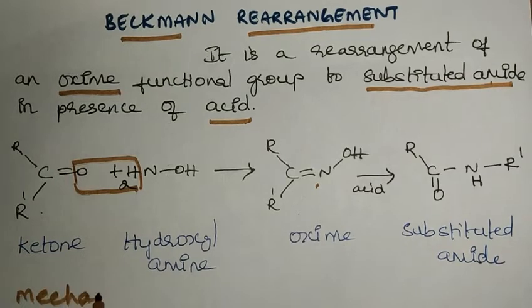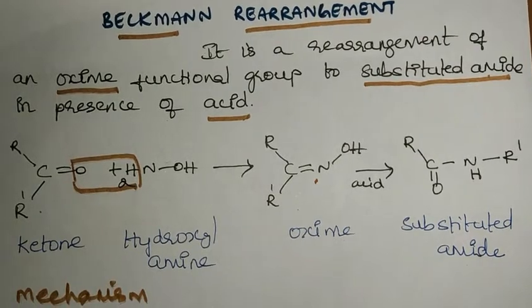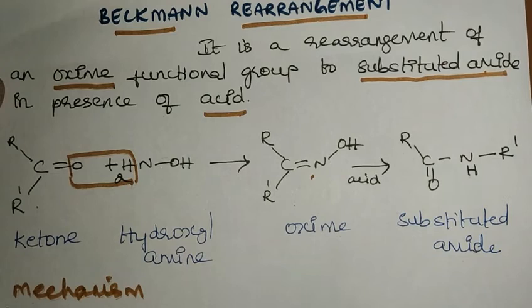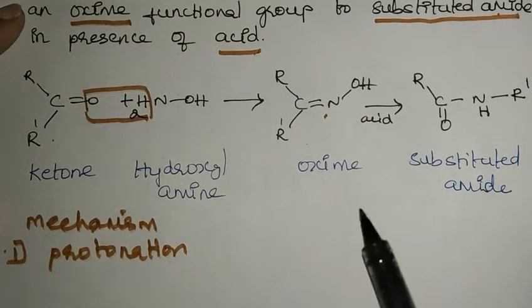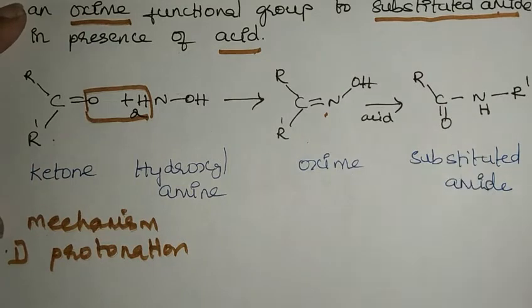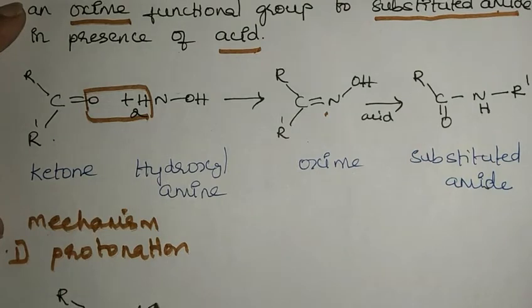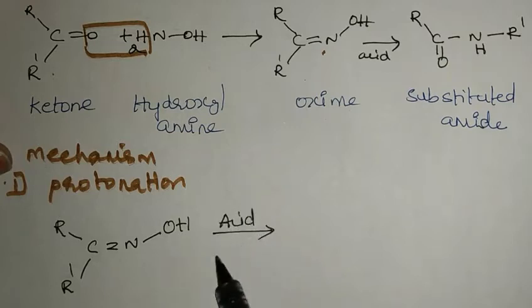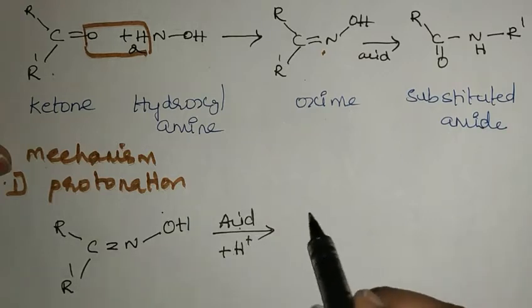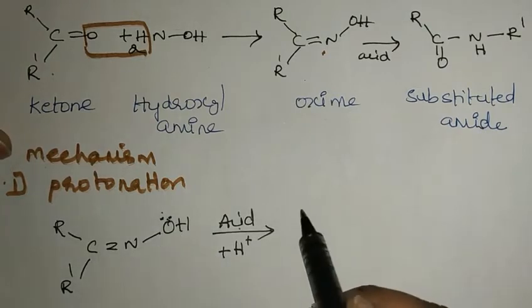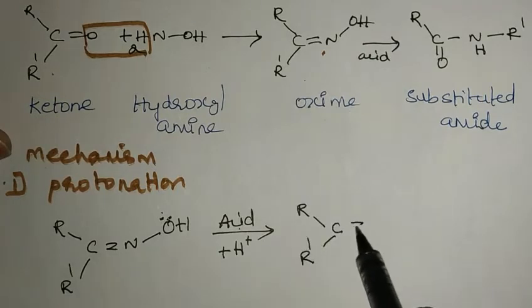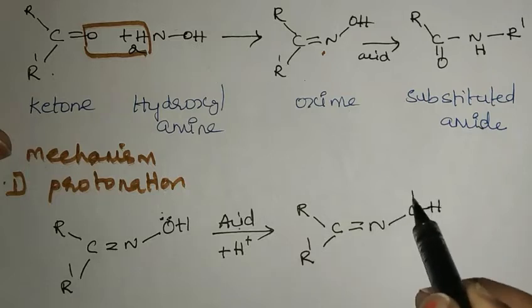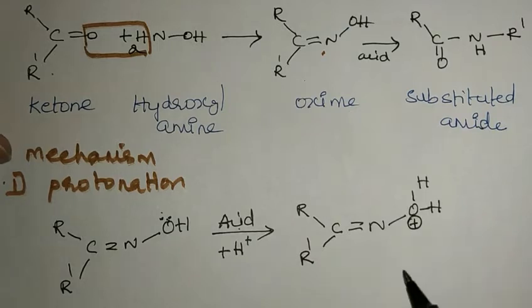Now we will see the mechanism involved in this reaction. The first step in this rearrangement is protonation — proton is added. The oxime will accept a proton from the acid, where the acid donates a proton to the electron-rich oxygen of the hydroxyl group. So H+ is added to the oxygen.